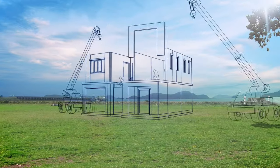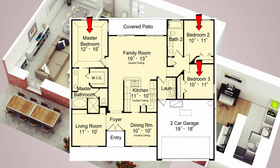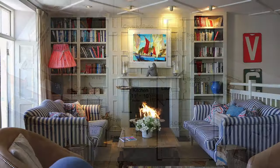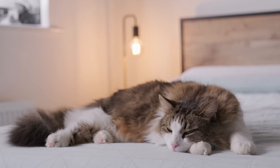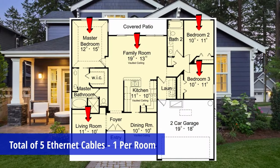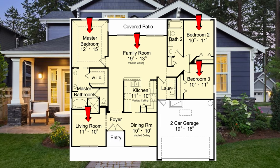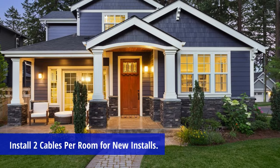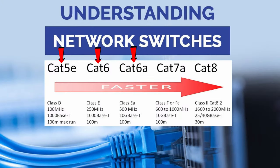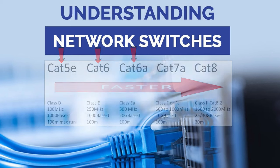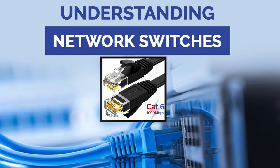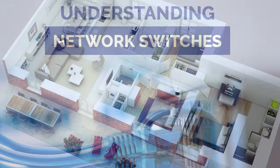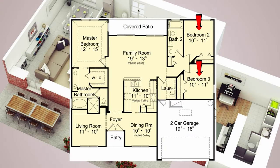For example, if you have a three-bedroom house with a family room and a living room, most new home builders will install one Ethernet cable per room — giving you a total of five Ethernet cables. However, if you install these cables yourself, install two cables per room. When I say Ethernet cables, I mean Cat5e or Cat6. Cat5e and Cat6 are the most popular in the industry, but Cat6 has become the standard over the last few years.